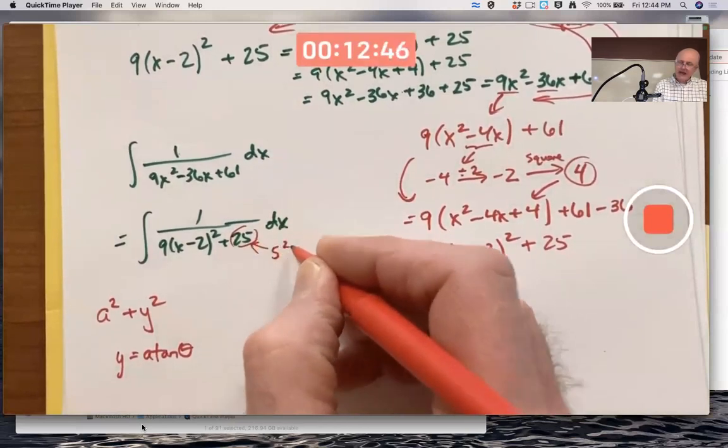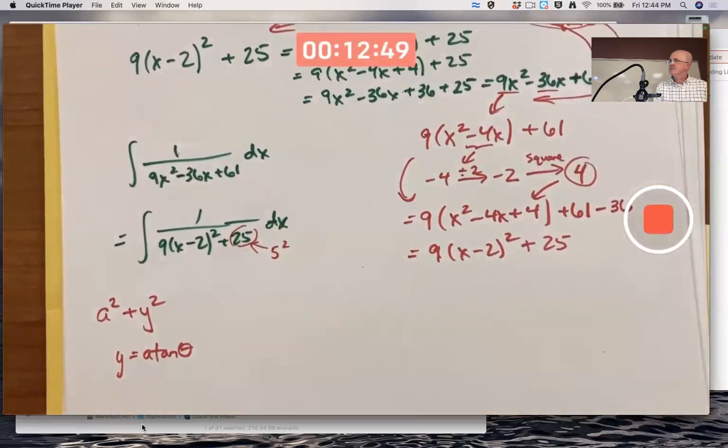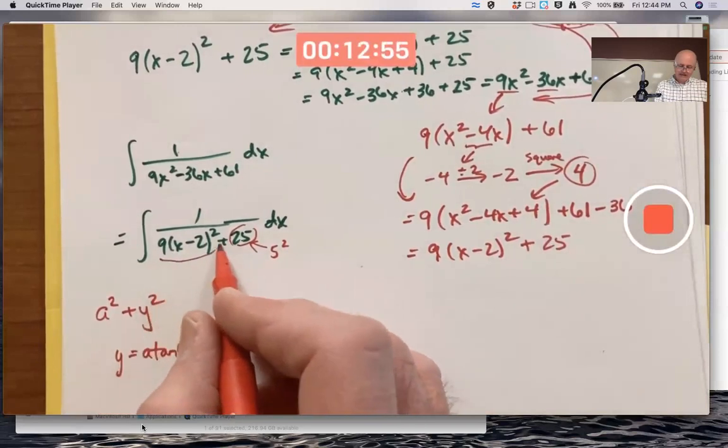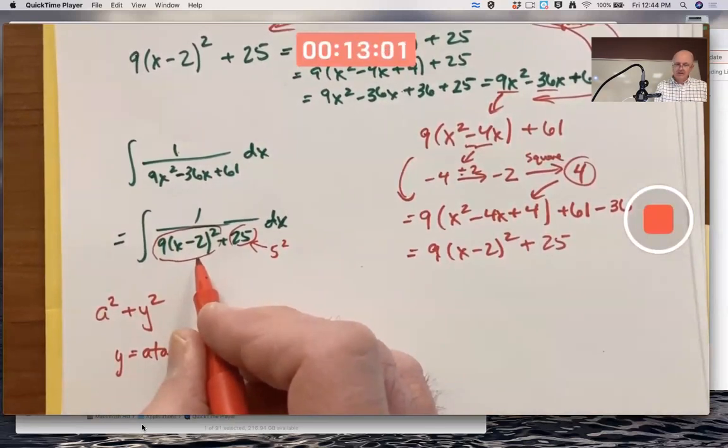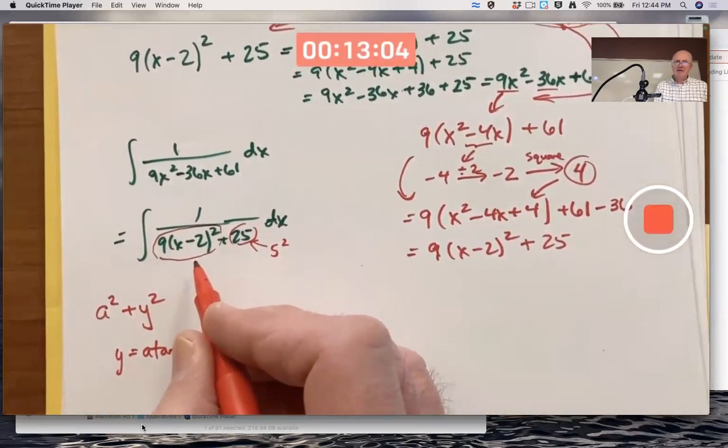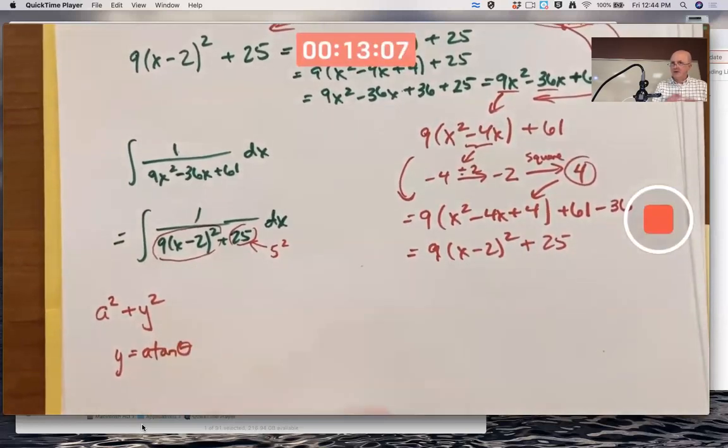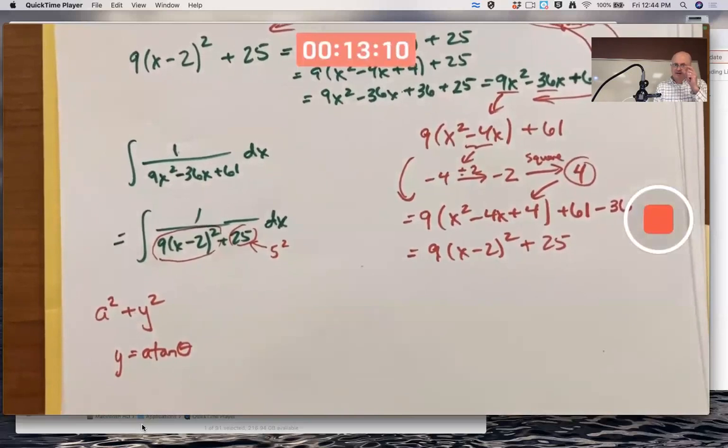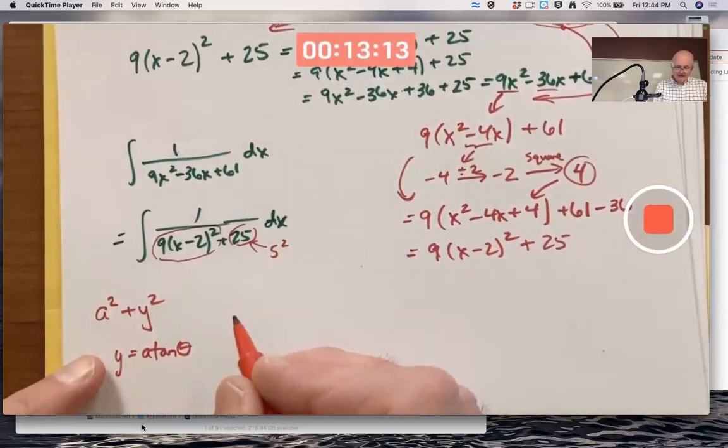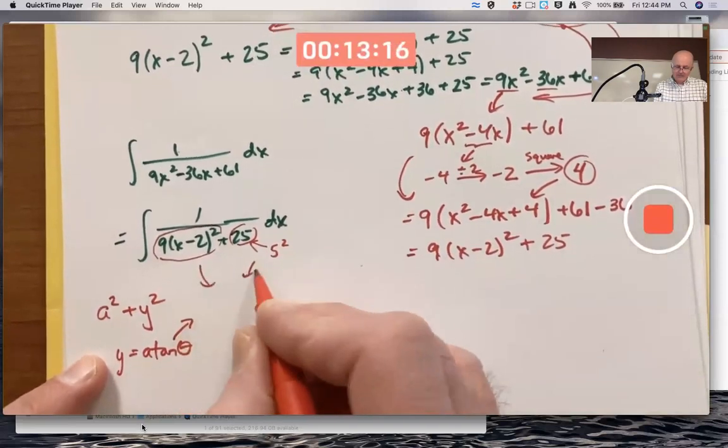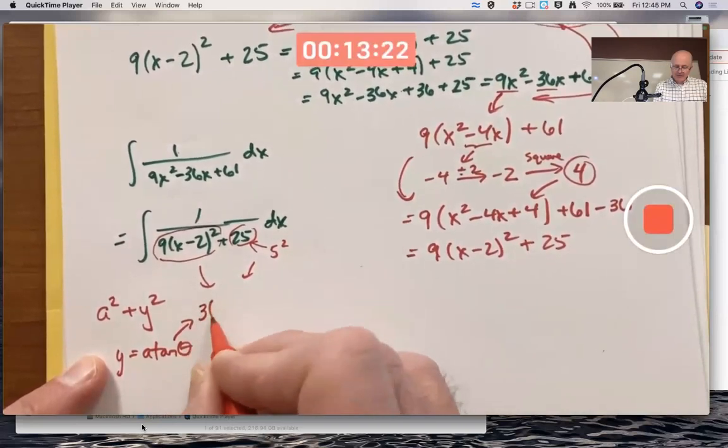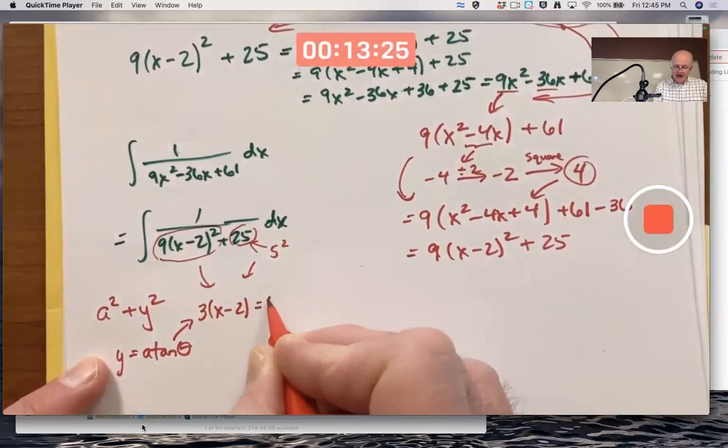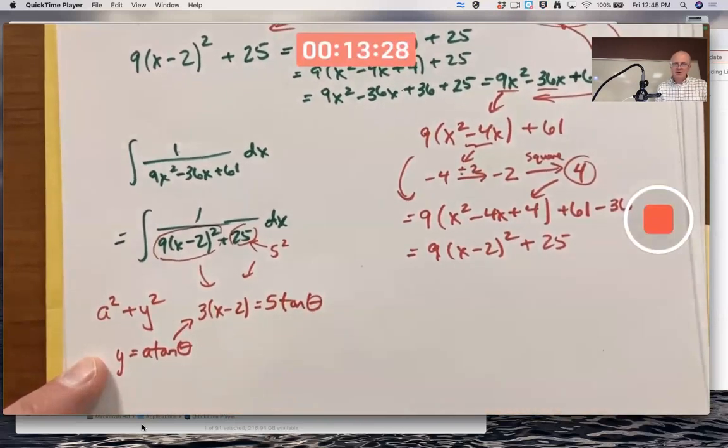Remember, last time I told you, when you have an expression of the form a² + y², where a is a constant and y is something that depends on x, that's a hint to let your substitution be y = a tan θ. What is the a in this problem? 25 is 5², so the a is 5. What is the y in this problem?